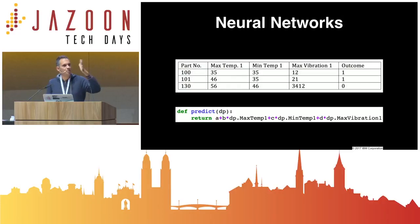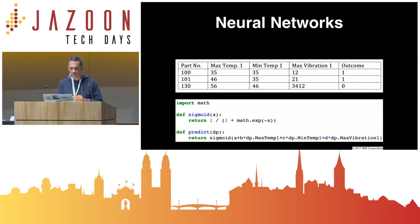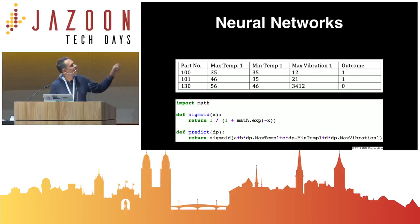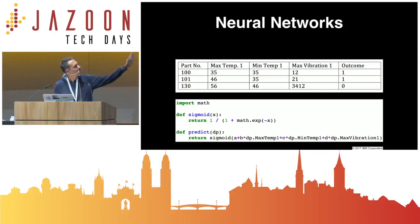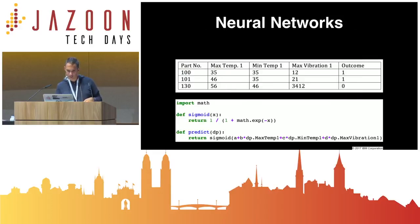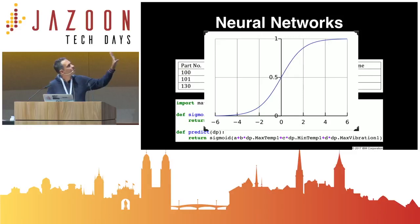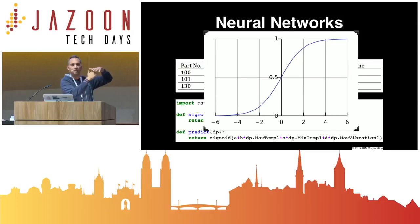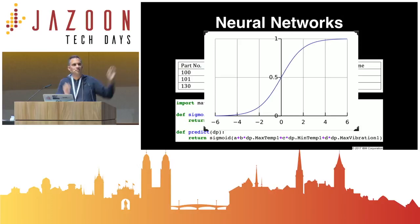Regression means I can predict a continuous value, but I want to predict a category. So you take the output of the linear regression model and apply it to a function called sigmoid, which is 1 over 1 plus e to the power of minus x. That takes a value range from minus infinity to plus infinity and squashes it to a range between 0 and 1. Then you define a threshold in the middle and you get a binary classifier out of a linear regression model.